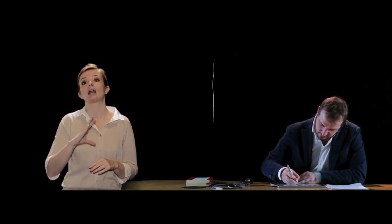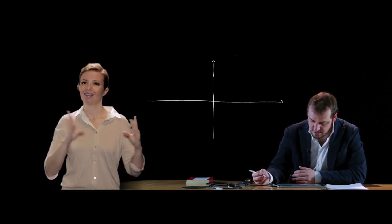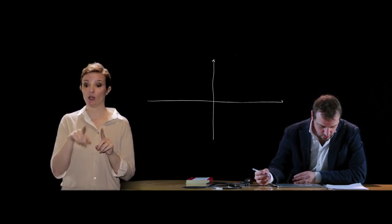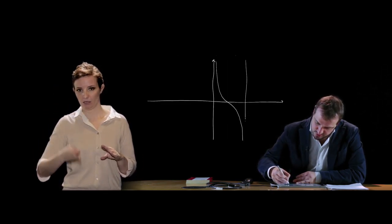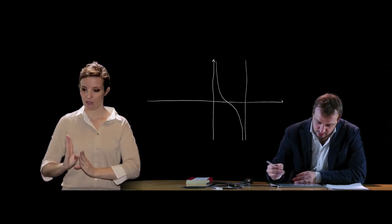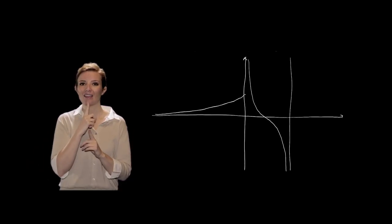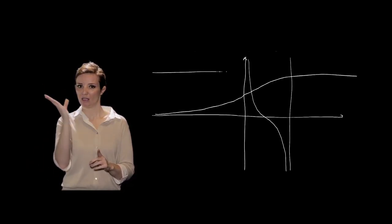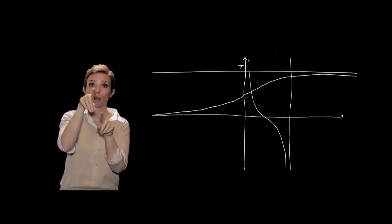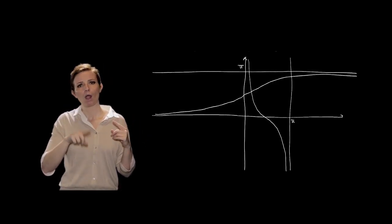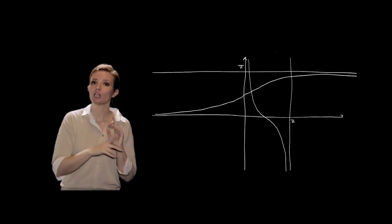L'arco cotangente ha un ragionamento del tutto analogo: l'intervallo da considerare è (0, π). La funzione arco cotangente ha un andamento con asintoti in corrispondenza di π e di 0. Simmetrico rispetto alla bisettrice, ha un asintoto orizzontale in corrispondenza di π. Anche in questo caso il dominio è ogni x ∈ ℝ e il codominio è limitato tra 0 e π.